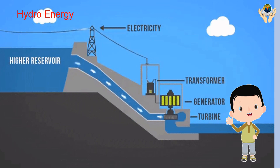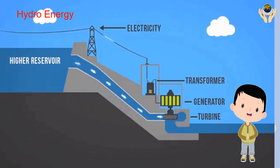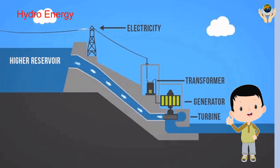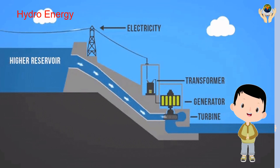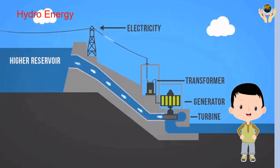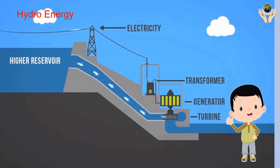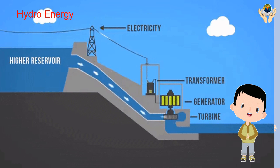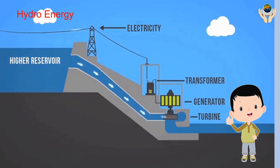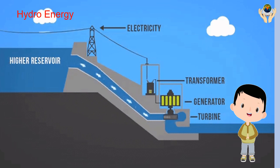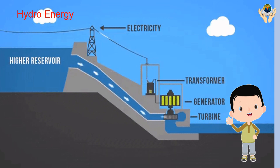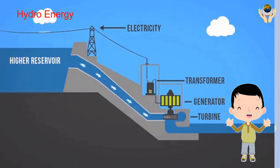Hydroelectric energy is energy derived from the movement of water. Water has mass; it falls and flows downward due to gravity. When it moves, it has kinetic energy, which can be used to generate electricity. Kinetic energy is the energy of motion.